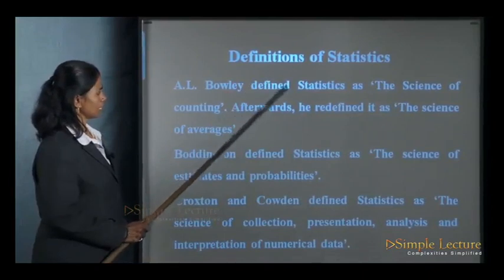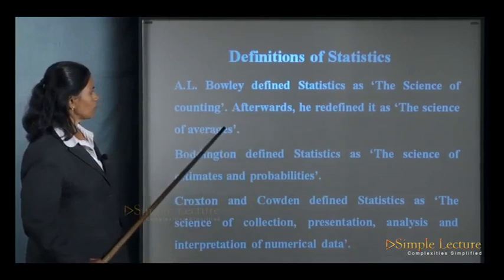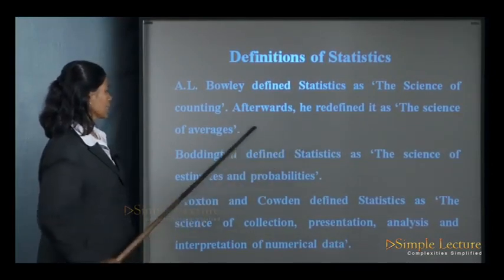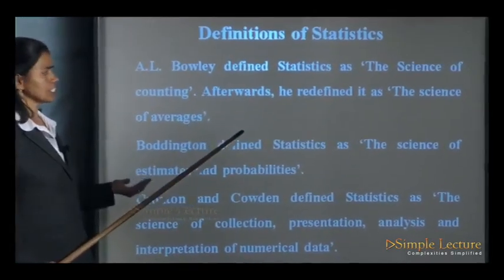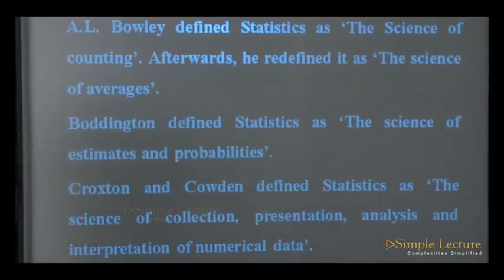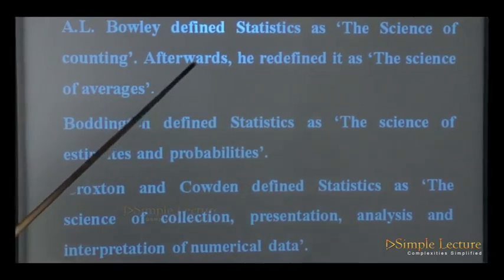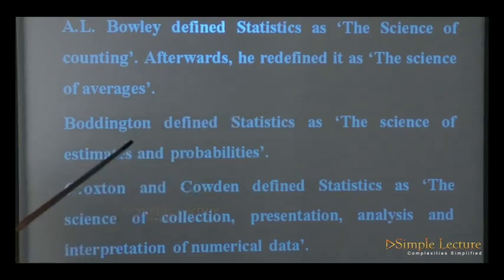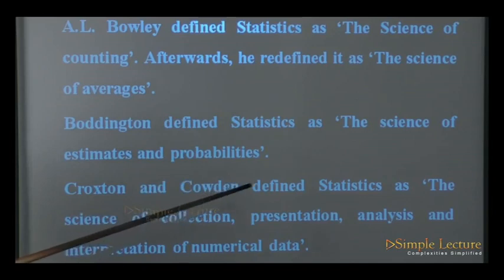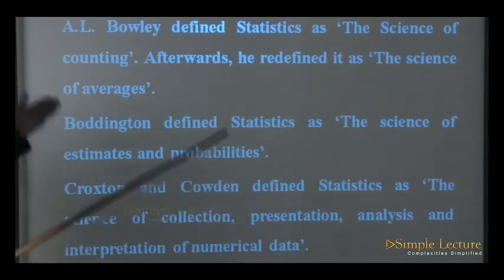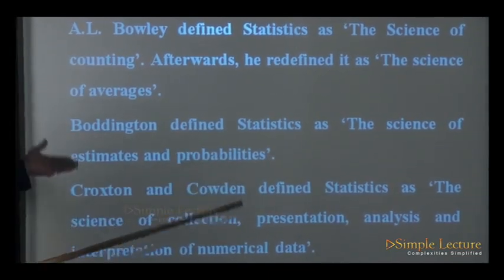Various statisticians have defined statistics differently. E. L. Bowley defined statistics first as the science of counting, and later redefined it as the science of averages — meaning mean, median, mode, etc. Burlington defined statistics as the science of estimates and probabilities. Croxton and Cowden defined statistics as the science of collection, presentation, analysis, and interpretation of numerical data.